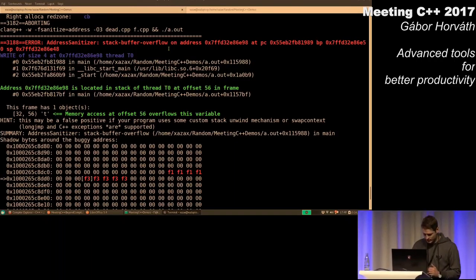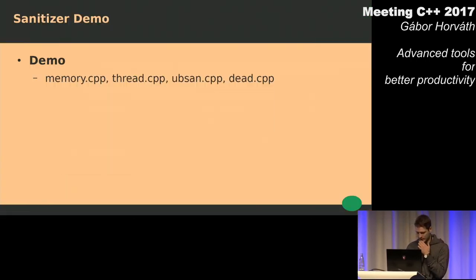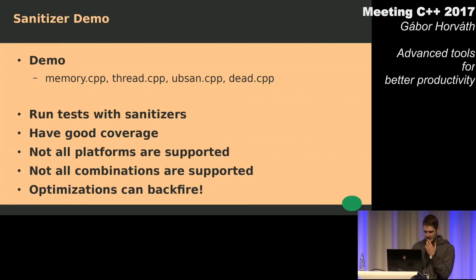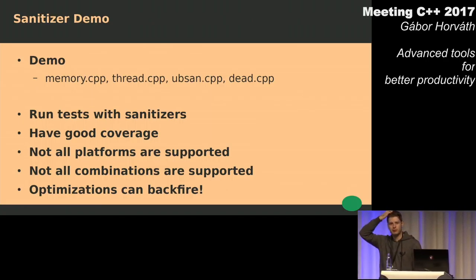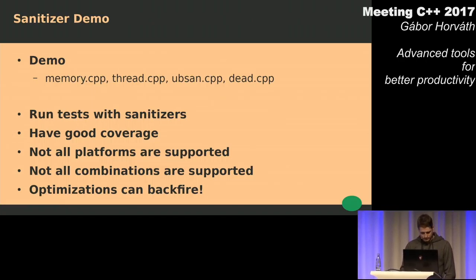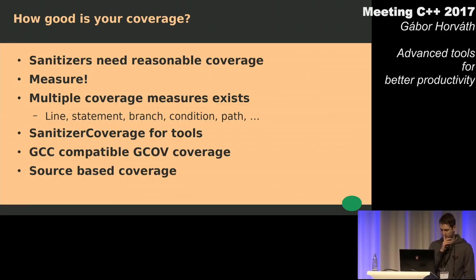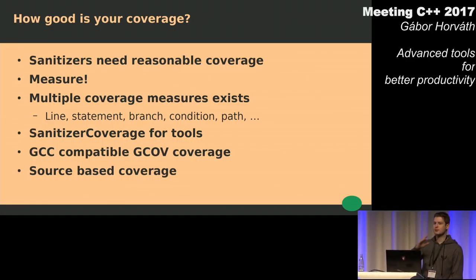Some of the sanitizers can be run together — for example, you can use UBSan together with the address sanitizer. Unfortunately, not all platforms are supported. Dynamic analysis needs coverage, so how do you know that you well tested your code? One of the ways to have some kind of number to tell you something about how well you tested your code is to measure coverage.